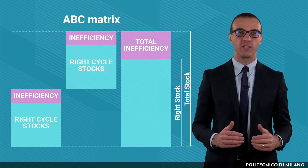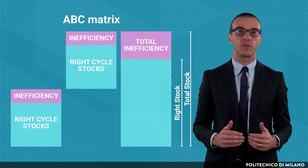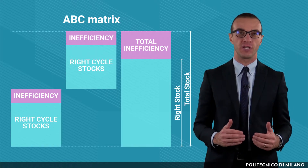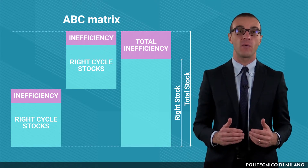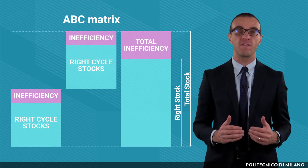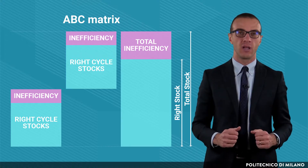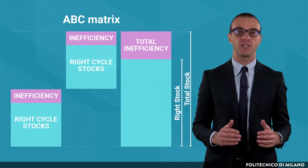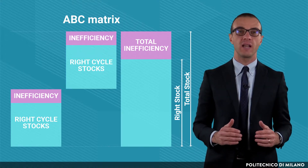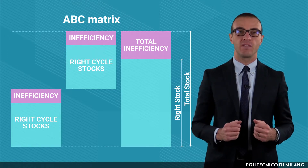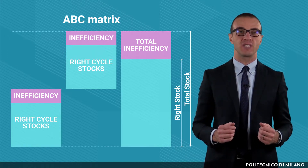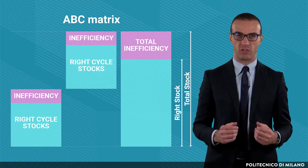In this lecture, we will analyze the ABC inventory sales matrix. A company usually has both inventories needed for the proper functioning of its operations, and inventories that are not necessary and are related to inefficient inventory management. In order to minimize the inefficiencies, the right level of inventory should be identified. The ABC inventory sales matrix is a useful tool to achieve this objective.